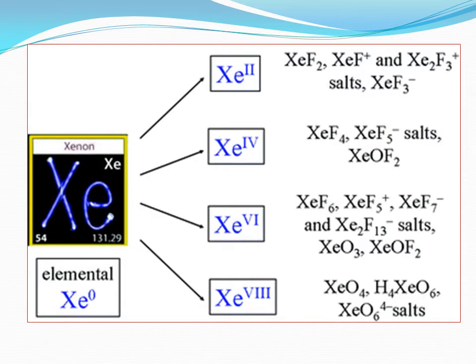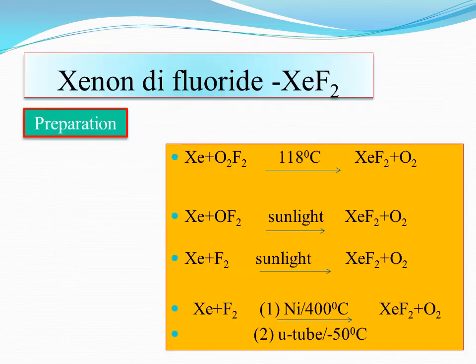Noble gases form compounds only with oxygen and fluorine because these elements have high electronegativity values. Xenon forms three fluorides: XeF2, XeF4, and XeF6; and two oxides: XeO3 and XeO4. These five compounds and their preparation, properties, and structures will be discussed.